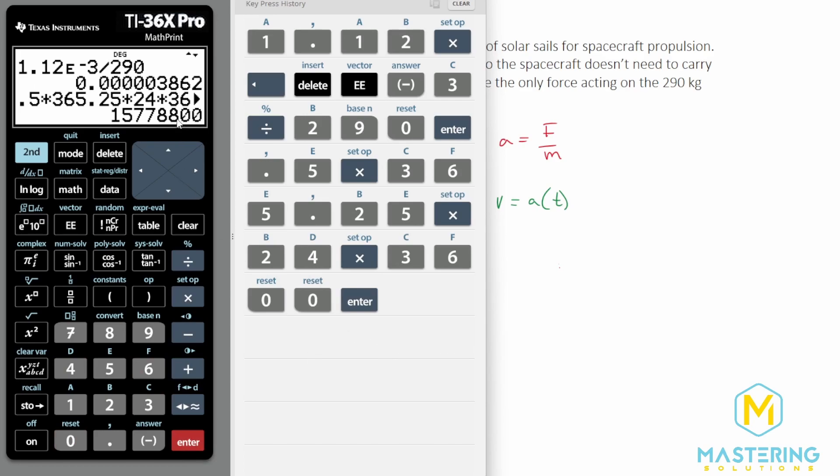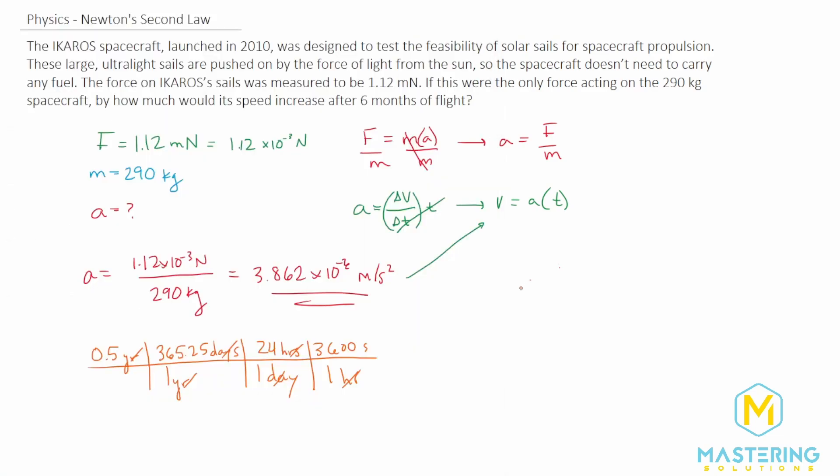So we have 1.57788 times 10 to the 7 seconds. The final answer that we get at the end, we'll use that number to then change it to however many significant figures that we need in this problem.